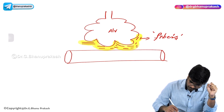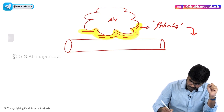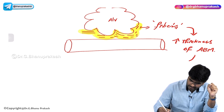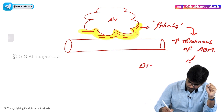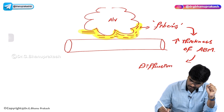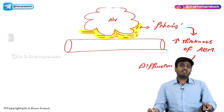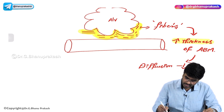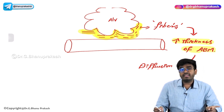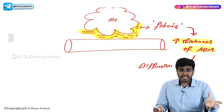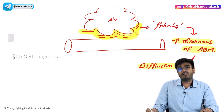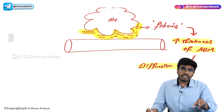In pulmonary fibrosis, there is thickening of the alveolar basement membrane or the respiratory membrane, which causes decreased diffusion. So the two important pathological conditions where diffusion of gases decreases are: emphysema - where diffusion decreases because of decrease in the respiratory surface area, and pulmonary fibrosis - where diffusion decreases because of thickening of the alveolar basement membrane due to extra fibrotic material deposition.